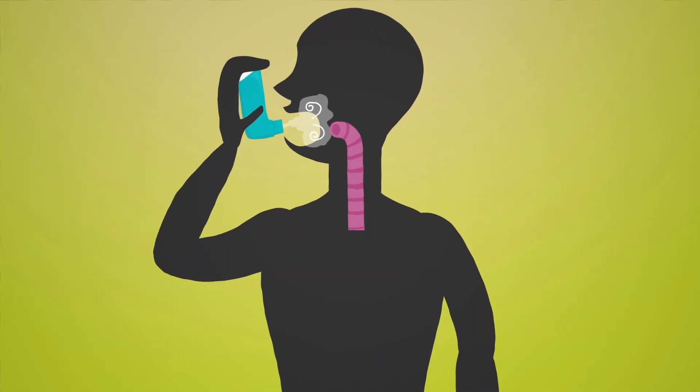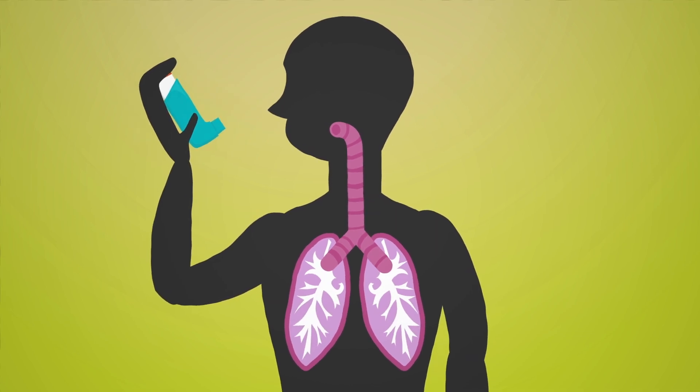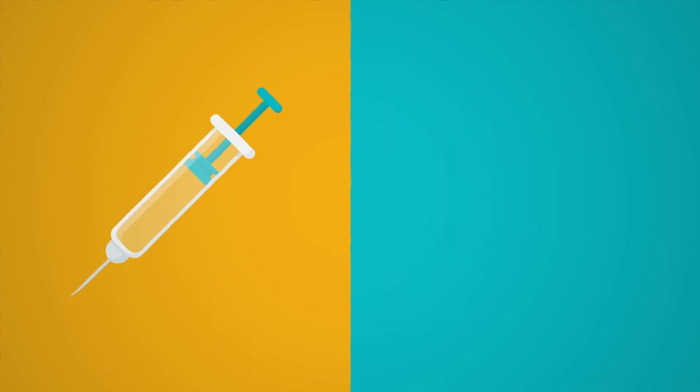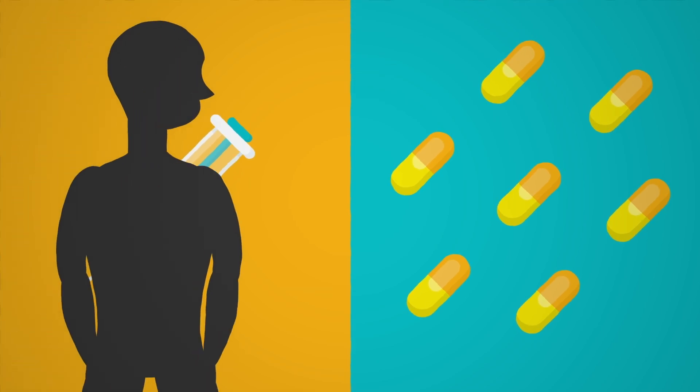The steroids in inhalers and creams impact only the affected organ, the skin, or the lungs. Intravenous or oral versions, used to treat chronic autoimmune conditions like lupus or inflammatory bowel disease, impact the whole body.